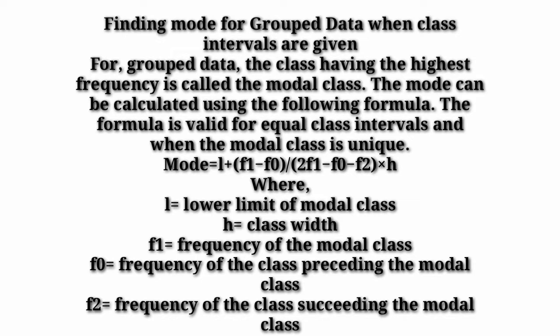The formula is: Mode = L + [(F1 − F0) / (2F1 − F0 − F2)] × H. Here, L is the lower limit of the modal class. H is the class width — the difference between the class boundaries. F1 is the frequency of the modal class — the highest or largest frequency. F0 is the frequency of the class preceding the modal class, and F2 is the frequency of the class succeeding the modal class.